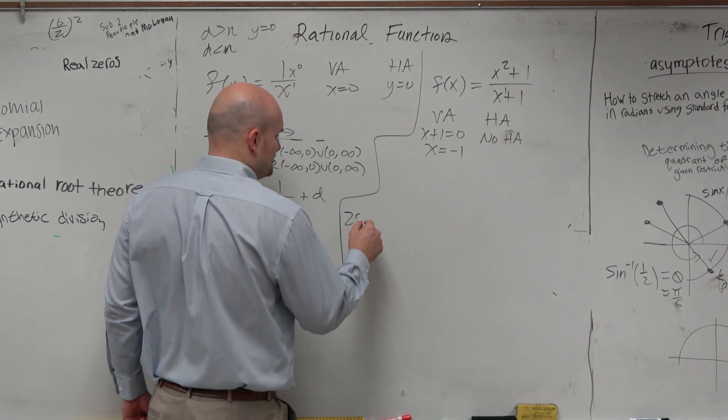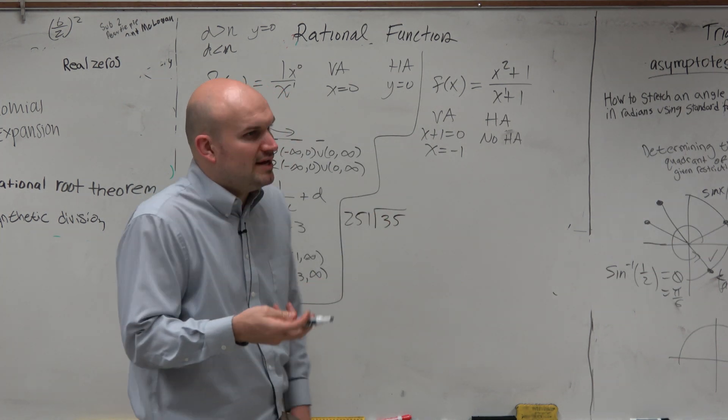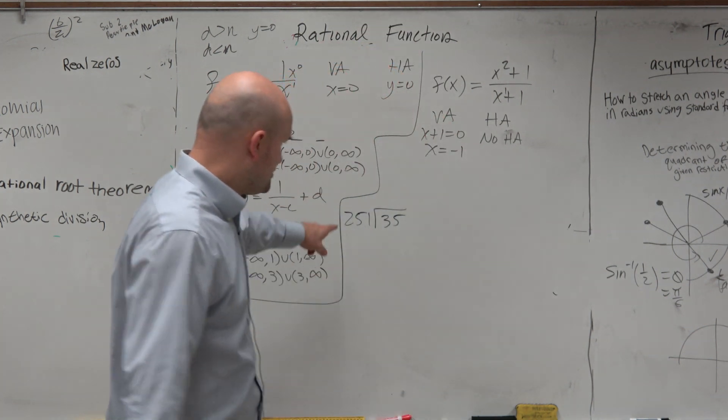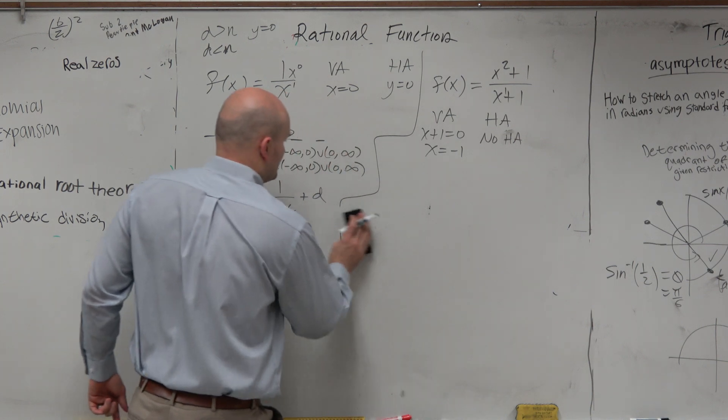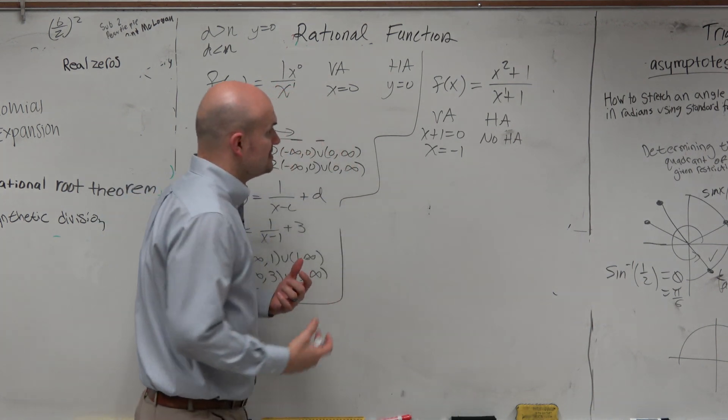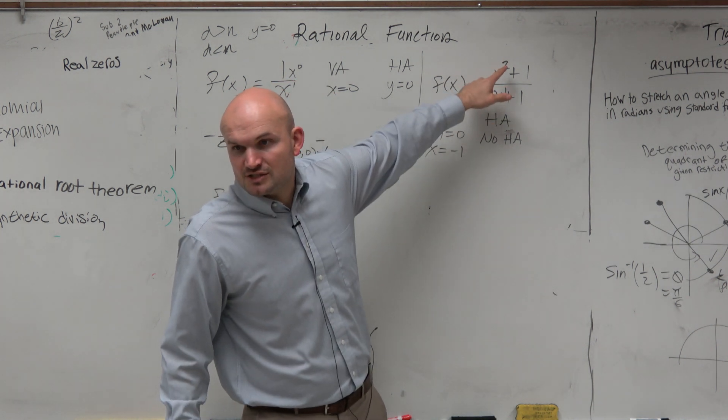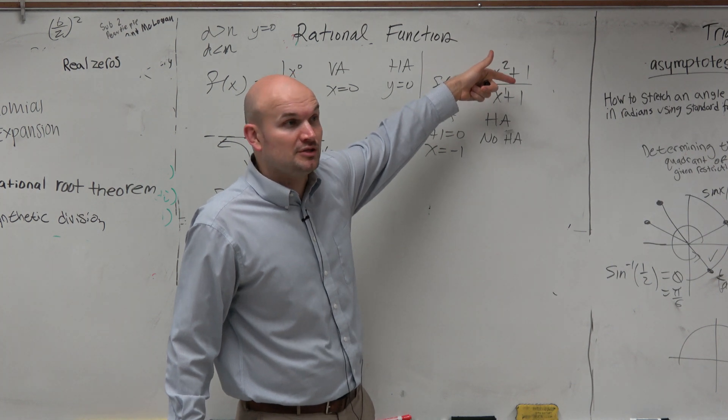But obviously, if I was to ask you, does 251 divide into 35, you'd say, well, no. That'd have to be like some decimal, right? You'd have to create a decimal and do all that kind of stuff. But 251 is larger than 35. So when we look at this, when we compare degrees, when x is smaller than x squared, does it make sense then that this polynomial in the denominator is going to divide into the polynomial in the numerator?